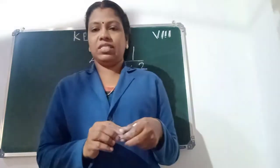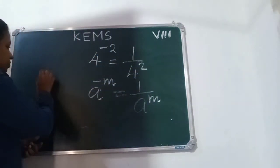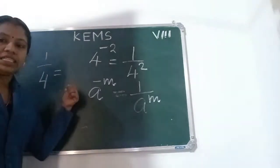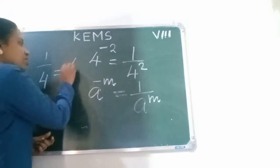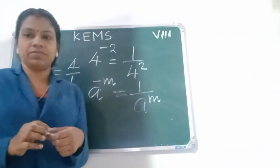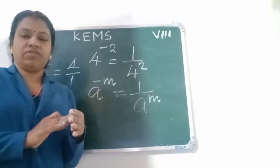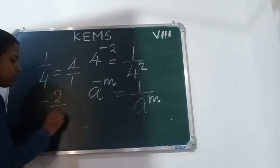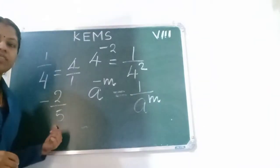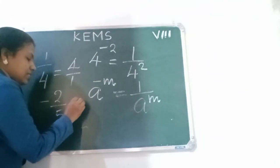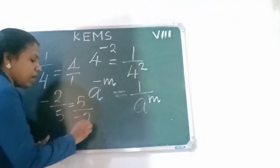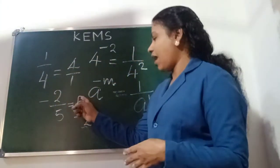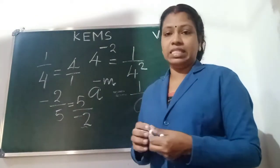Multiplicative inverse of 1 by 4 is 4 by 1, which equals 4 — just the inverse form, the reverse form. What about the multiplicative inverse of 2 by 5? It is 5 by negative 2 — just the fraction inverted with the same sign.